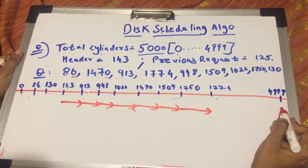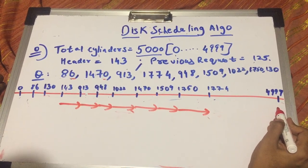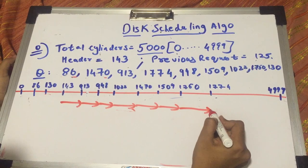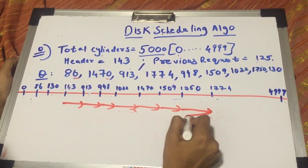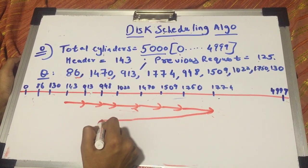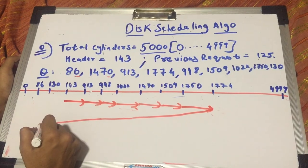Now instead of going up to 4999 like we did in the C-SCAN, we go back. Okay, if you remember in the C-SCAN, we went back up to 0. But in C-LOOK, you go back only at 86.